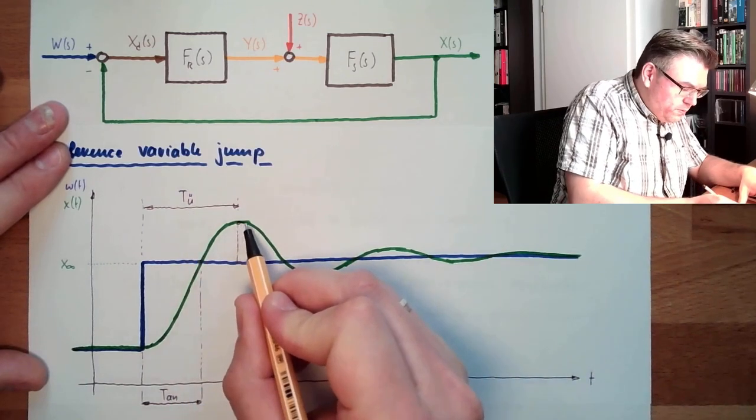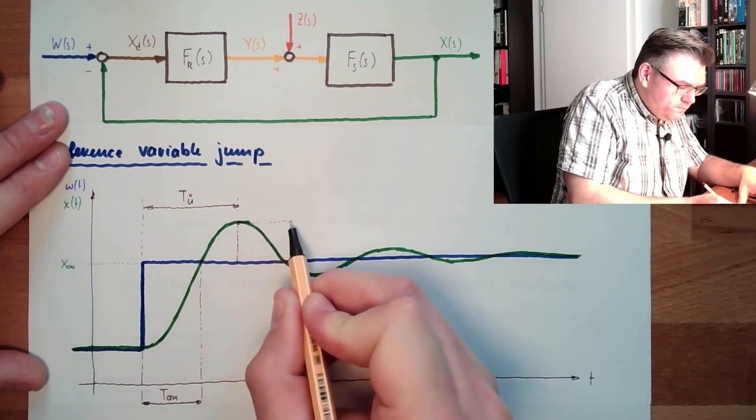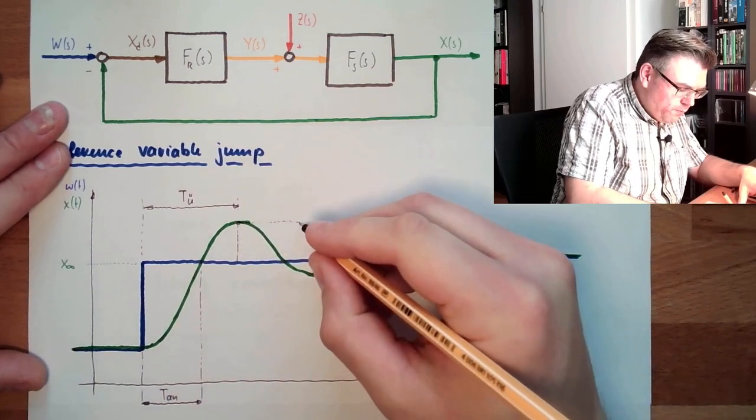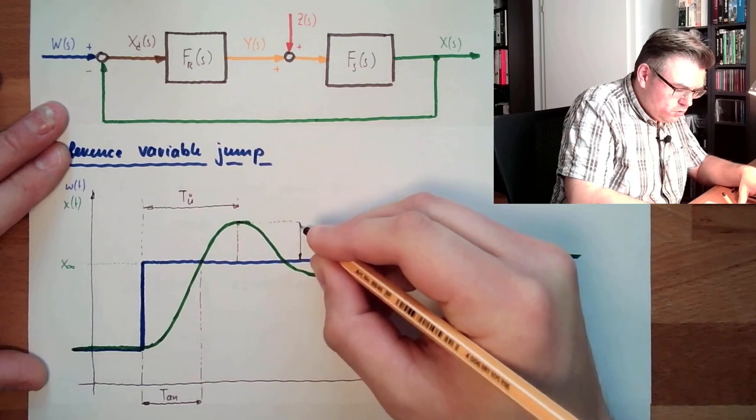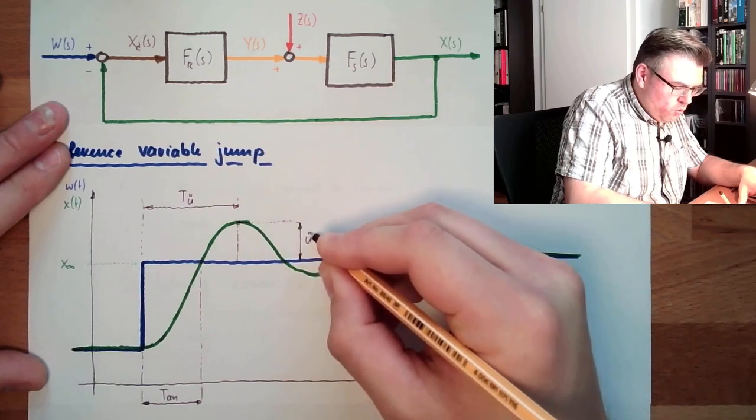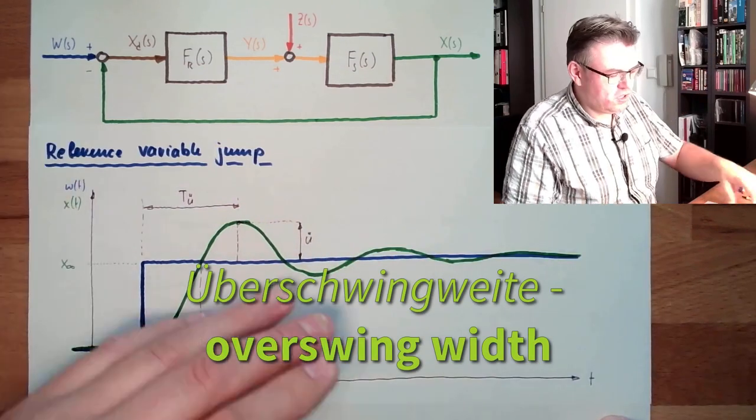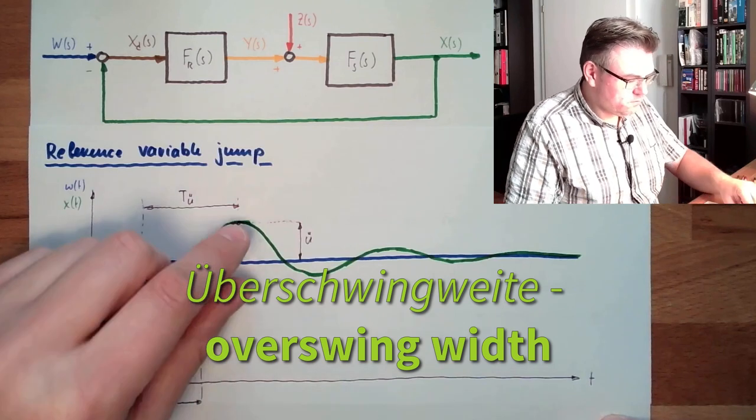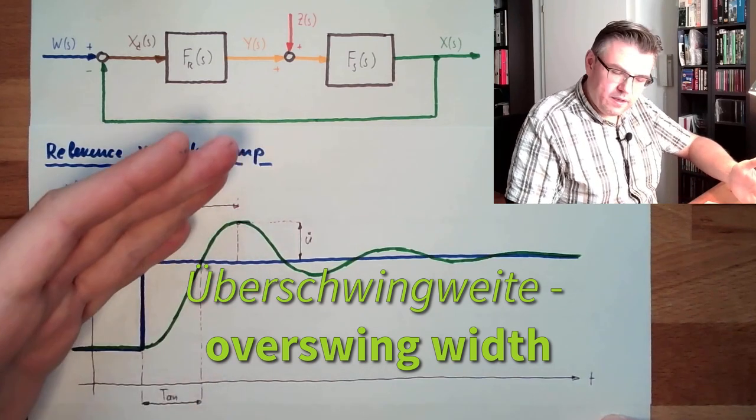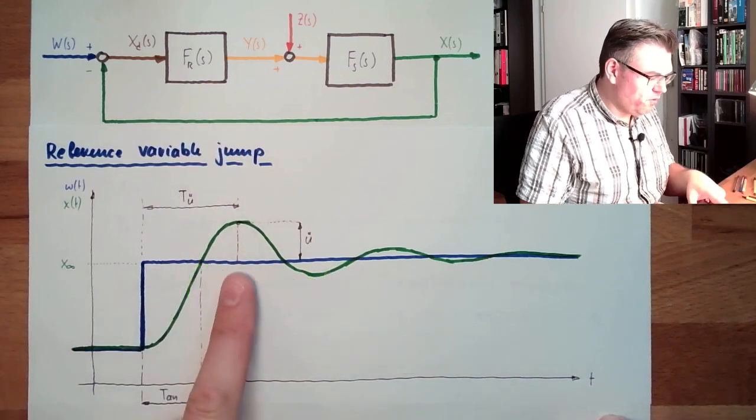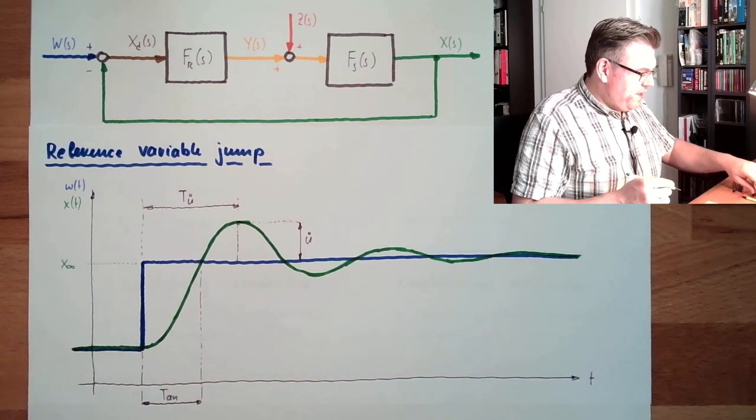And then we have the overswing width, or overswing value. This is this. In German, it's given usually in percent, how many percent it's overswinging. Overswing width, overswing value.